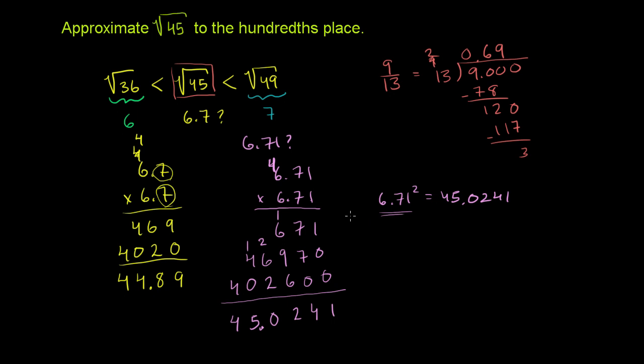So 6.71 is a little bit greater. So let me make it clear now. Now, we know that 6.7 is less than the square root of 45. And we know that is less than 6.71. Because when we square this, we get something a little bit over the square root of 45. But the key here is, when we square 6.7, we got 44.89, which is 11 hundredths away from 45. And then if we look at 6.71 squared, we're only 2.4 hundredths above 45. So this right here is closer to the square root of 45. So if we approximate to the hundredths place, definitely want to go with 6.71.